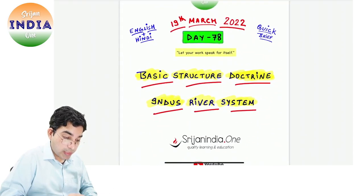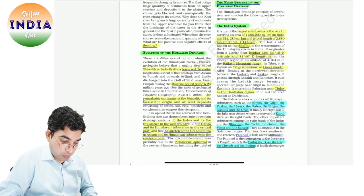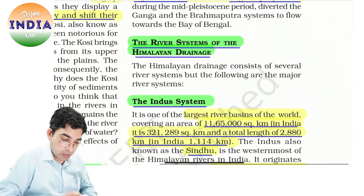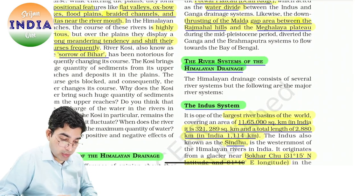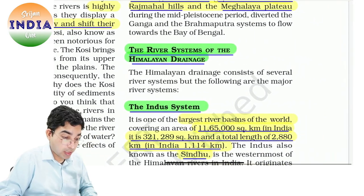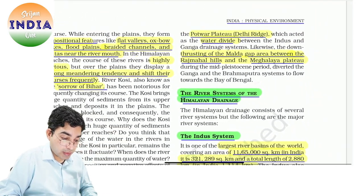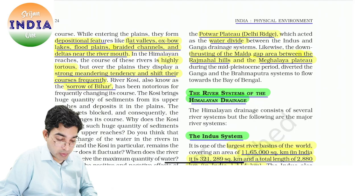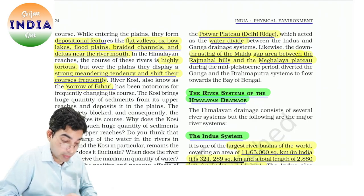Ab ek aur sawaal tha — wo tha about Indus River System. To dekho, yahan hum jo bhi padh rahe hain, main koshish yahi kar raha hoon even revision series mein — ki jo standard books hain wahin se content pick karein, so that aapko aisa nahi lagega koi naya content ho raha hai. Aap usi cheez ko revise karo — multiple times zyada benefit hote hain. Ye jo drainage system of India ki NCERT ki book hai, iska video bhi zaroor dekhiyega. Aaj tak jo bhi sawaal aaya hai UPSC mein, saare sawaal ise ek chapter se ban gaye.